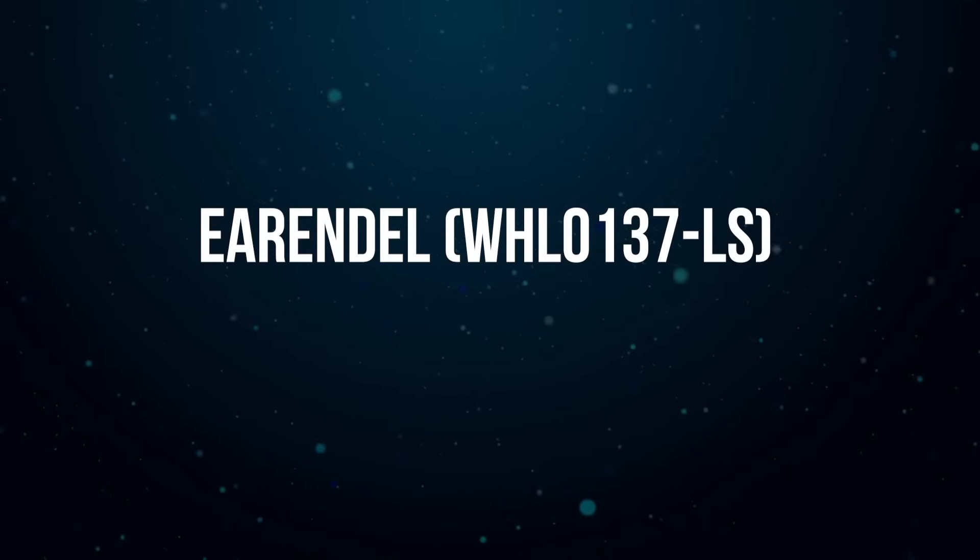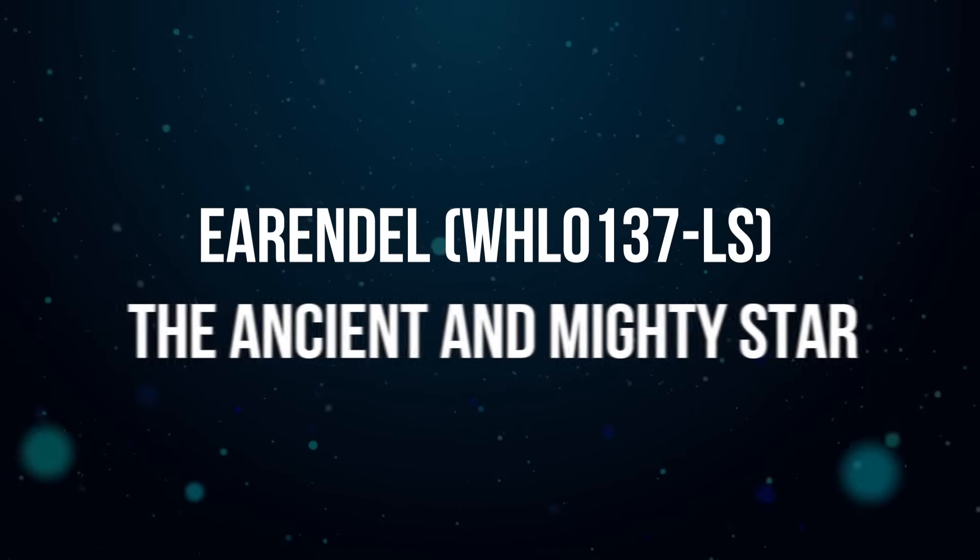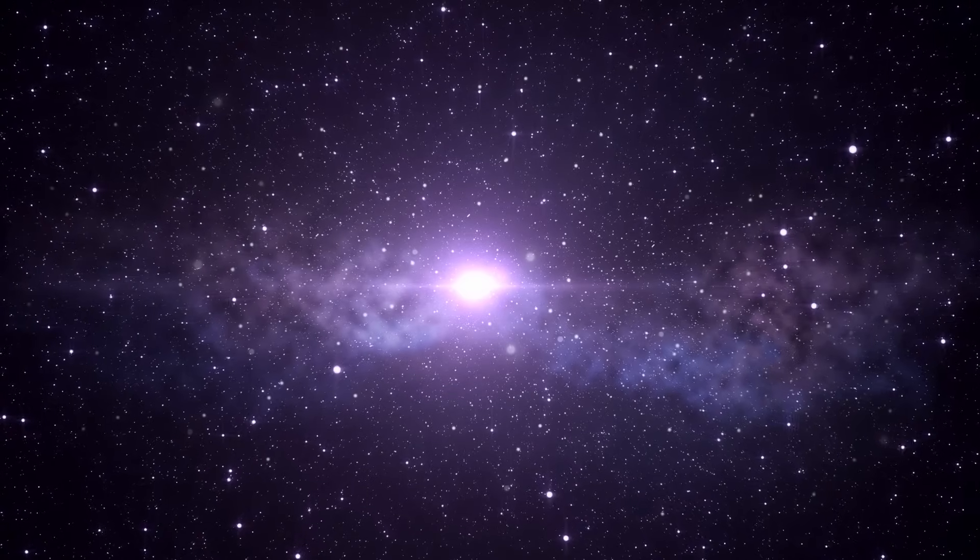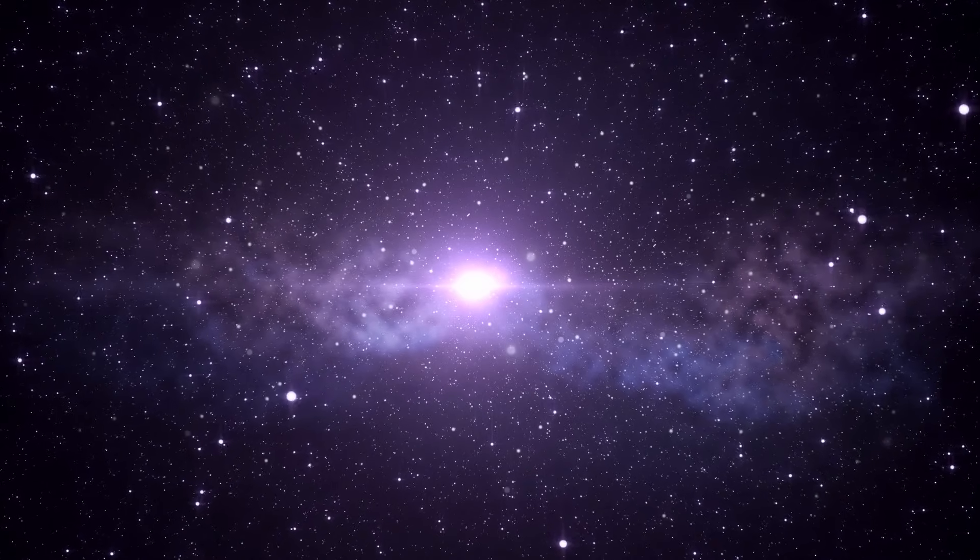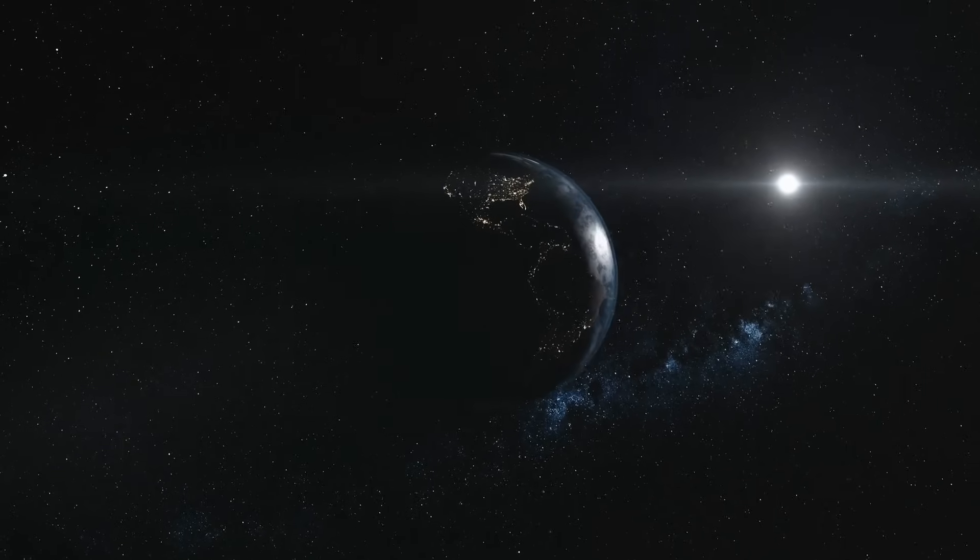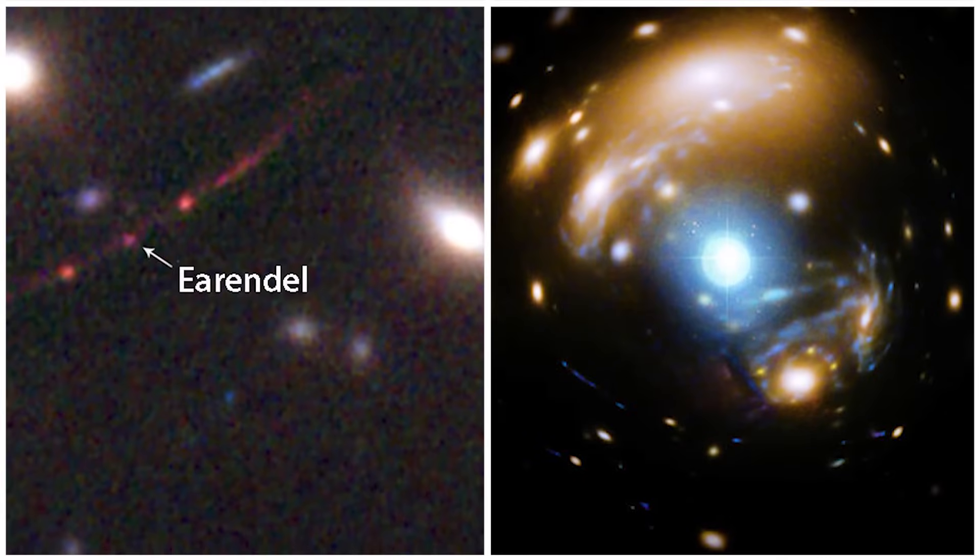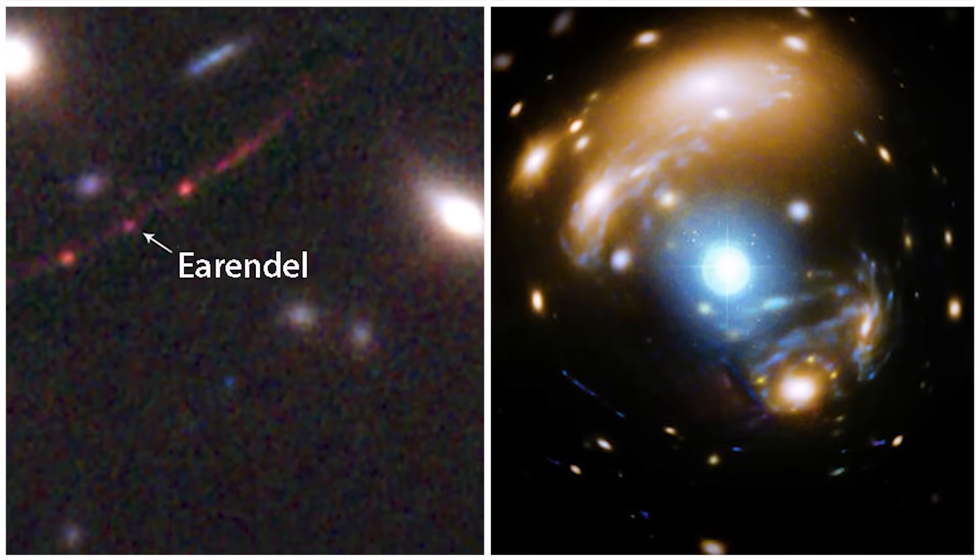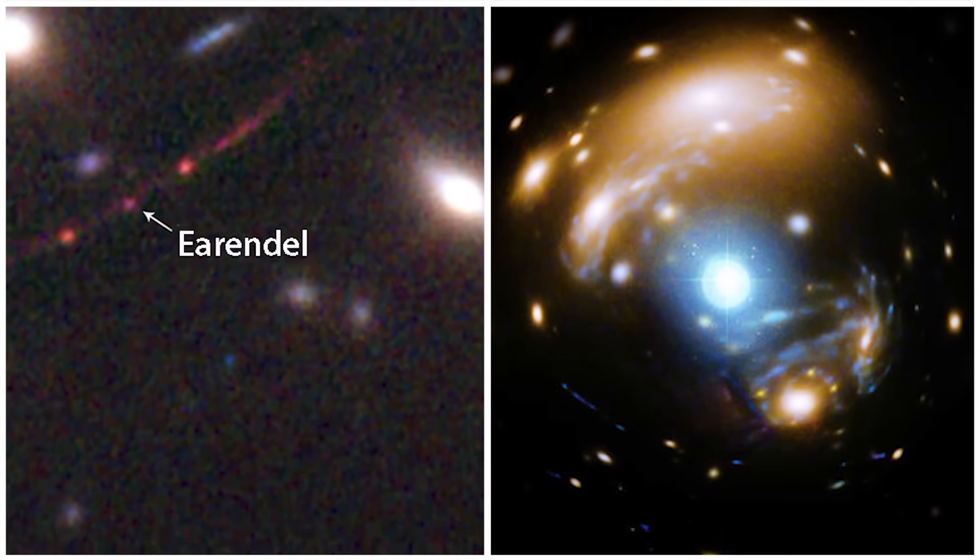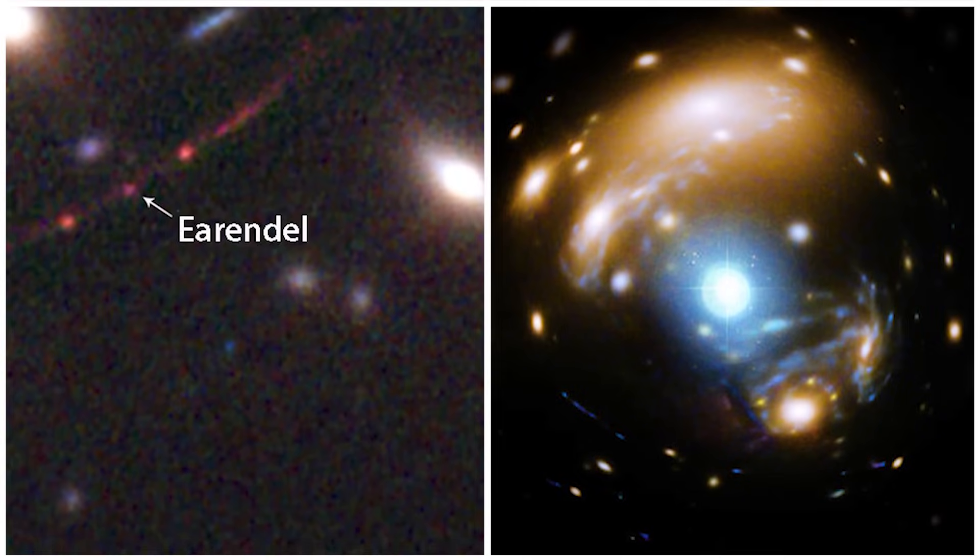Earendel, WHL0137-LS, the ancient and mighty star. Earendel is the earliest and most distant star discovered to date. It is located approximately 28 billion light-years away from Earth. Earendel is nearly twice as far as the previous record holder, Icarus, MACS J1149 Lensed Star 1.